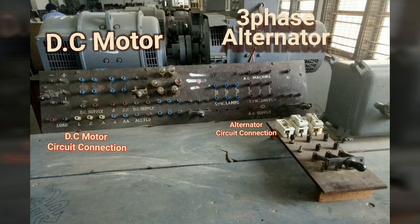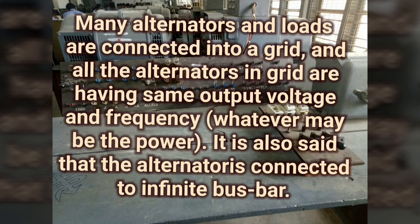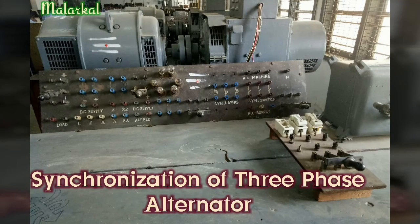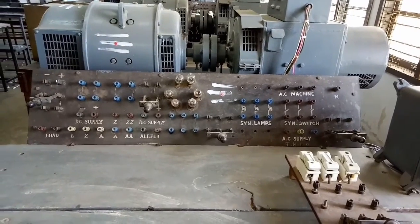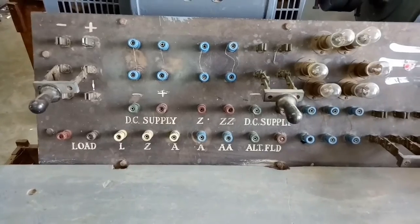The common methods used for synchronization of an alternator are: first, the three dark lamp method; second, the two bright one dark method; third, the synchroscope method. We will now conduct the synchronization experiment.